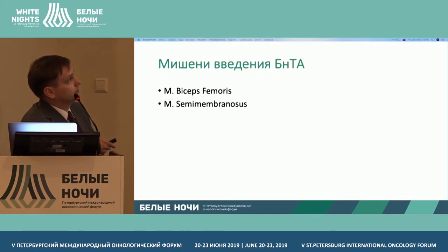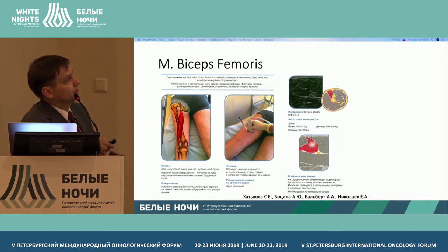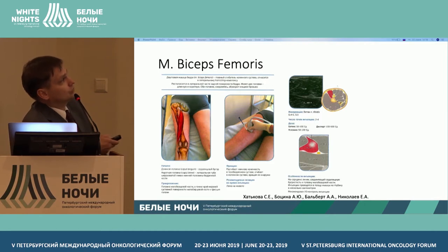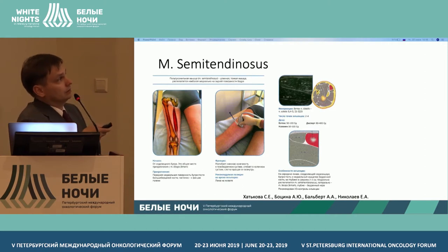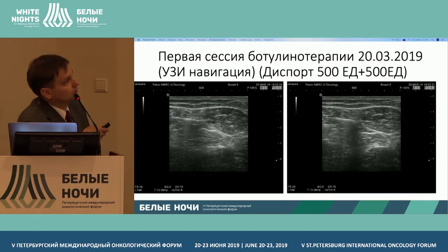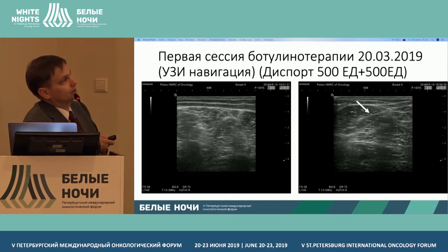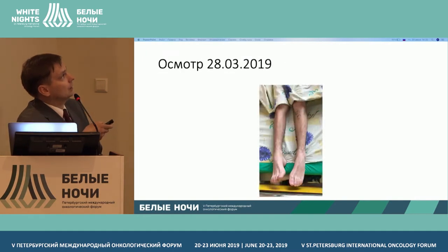You can see the ultrasound-guided navigation procedure. The biceps femoris is identified. When we performed botulinum therapy, we saw the following picture. Here is the semitendinosus muscle. For this case, 500 units is the maximum dosage. You can see the dosages that can be used. Under ultrasound-guided navigation, we use 500 units. Here we see the injection needle and the location within the muscle, with the cloud on imaging confirming that the injection has been made.